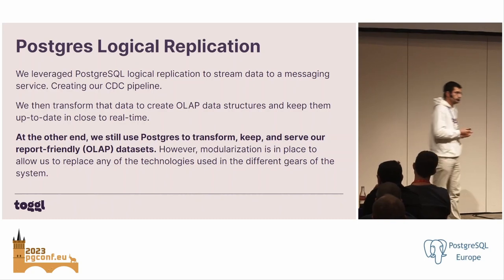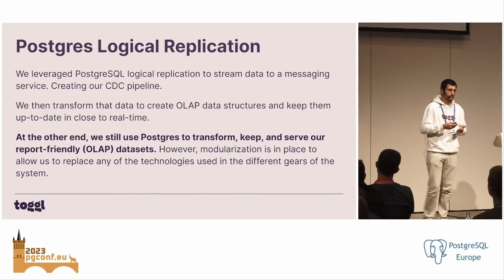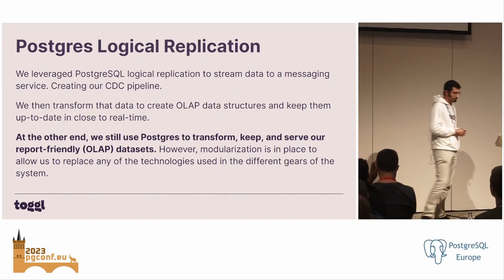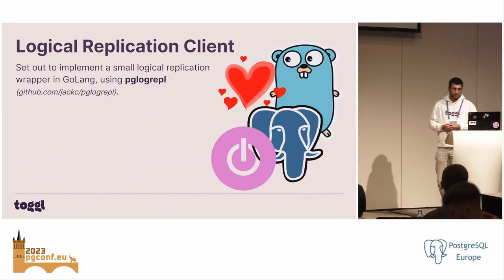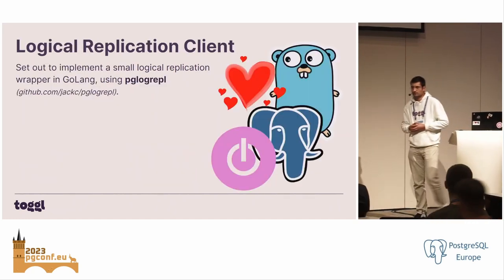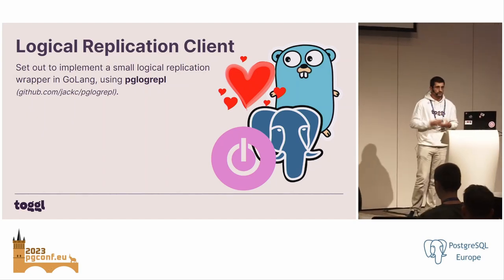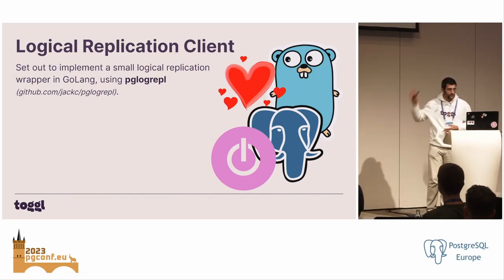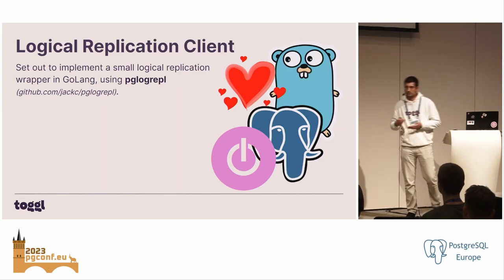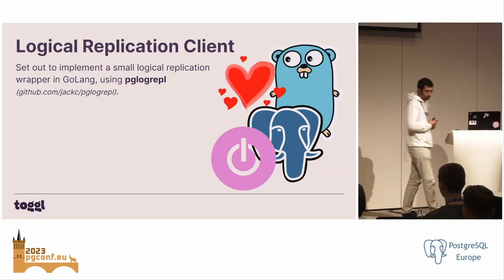We use those databases not only to keep our new all-app information, but also to do much of the heavy lifting when it comes to transforming that data. We are big Golang fans, so we decided to develop our logical replication client app in Golang, using pglogrepl — or however that package name is pronounced — which would be the application sitting on top of Postgres logical replication and receiving the stream of data.